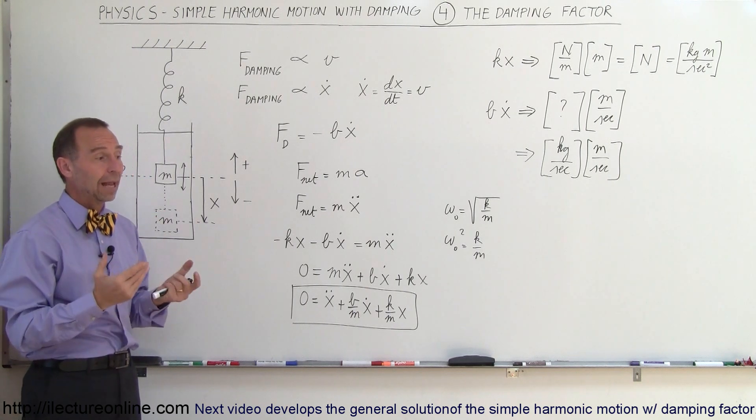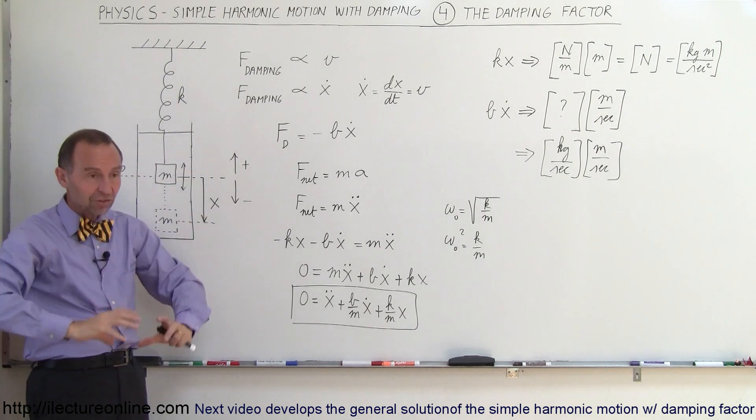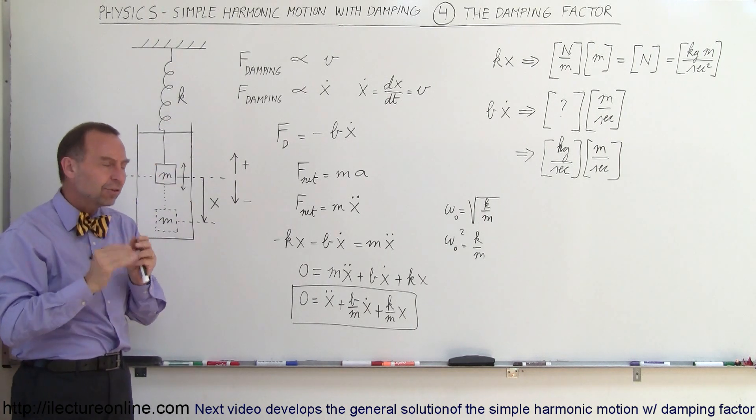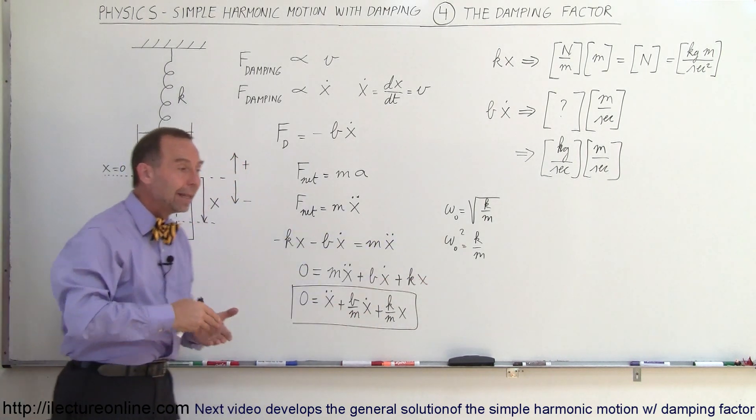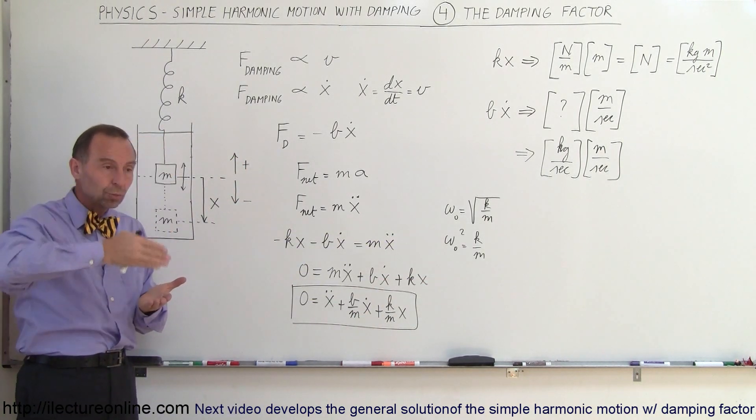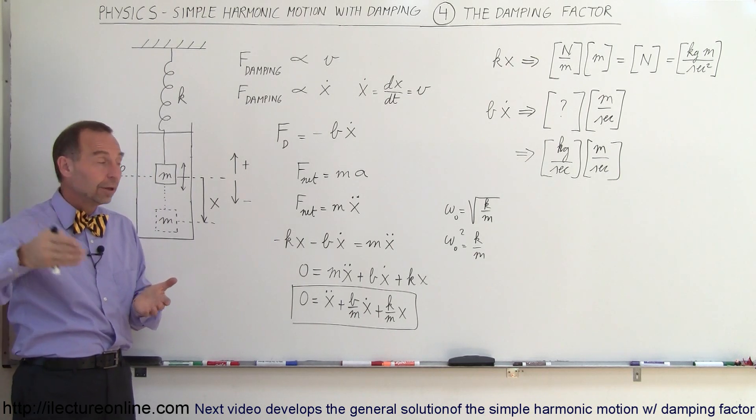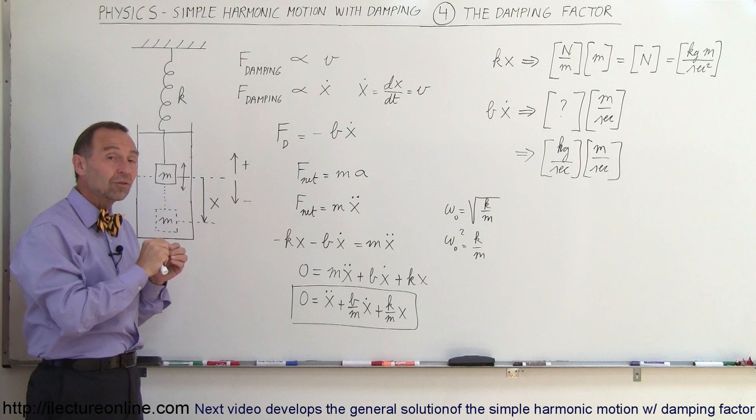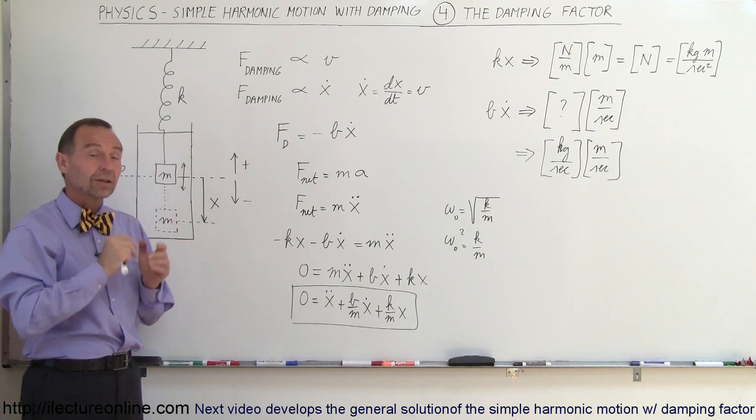If it's underdamped, you put the object away from the equilibrium point, and it will begin to oscillate back and forth. The frequency of oscillation will be a little bit smaller than what it would be without damping, and it would continue to oscillate, but the amplitude would diminish over time and eventually would go to zero. The weaker B is, the longer that will take. The stronger B is, the quicker that will happen.